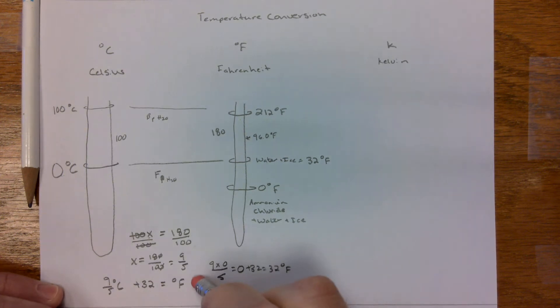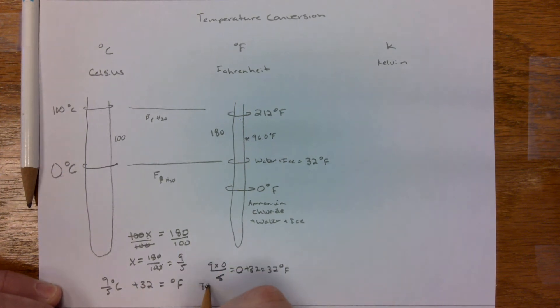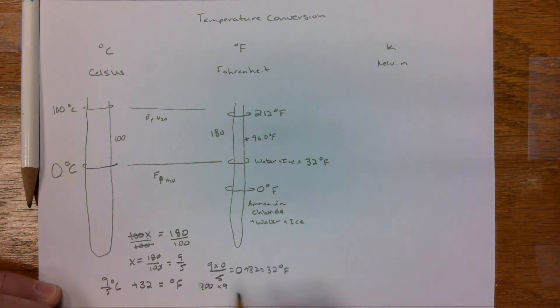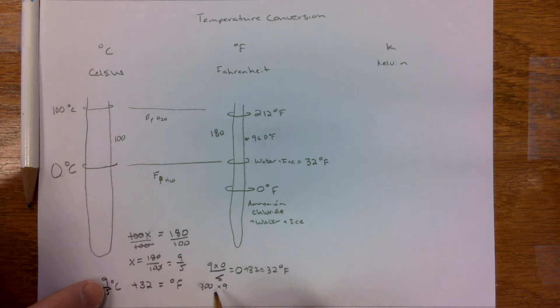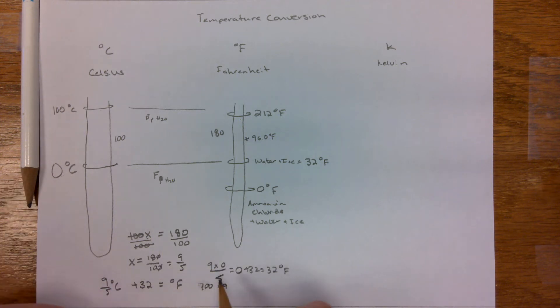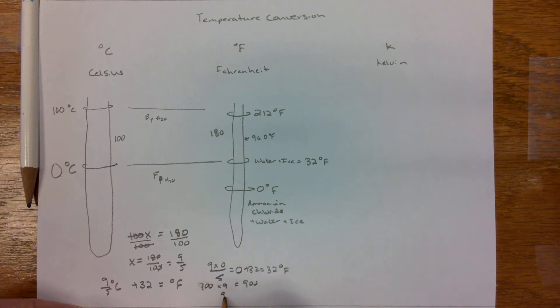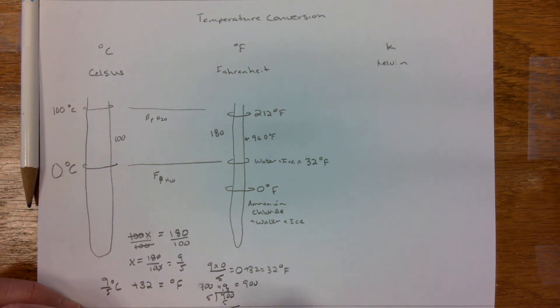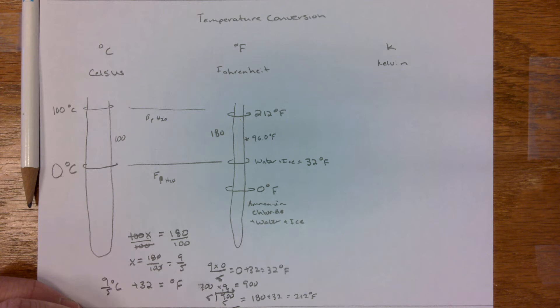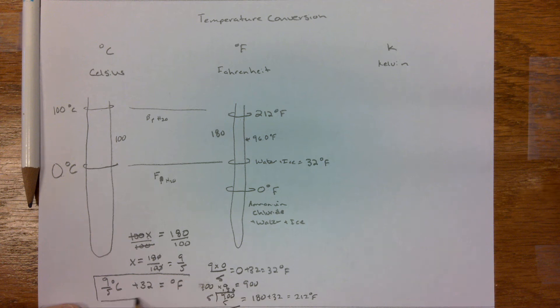100 times 9, because 9 times 100 is the same as saying 9 fifths times 100, but we're going to do it longhand. We're going to get 900. Well 900 divided by 5, I'm going to do the math here for you, is 180 plus 32 equals 212. So it actually worked out perfectly. The math is good, our scale is good, and our formula for converting is good.